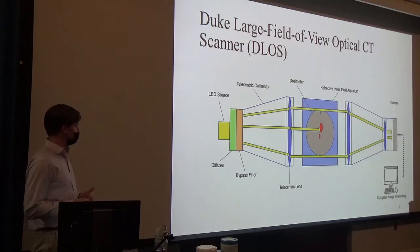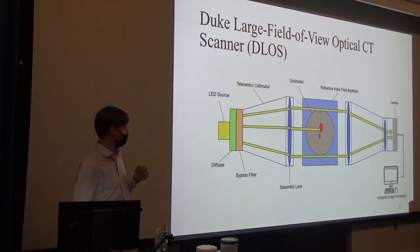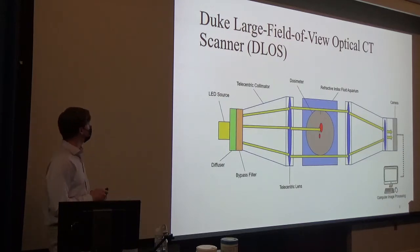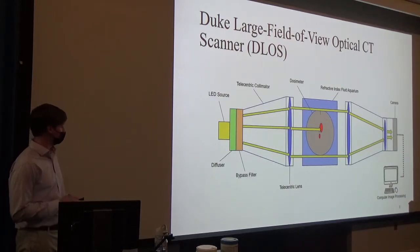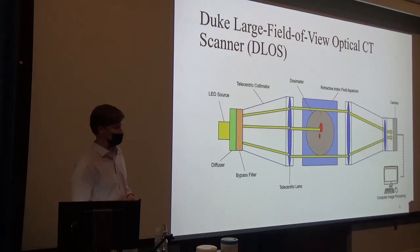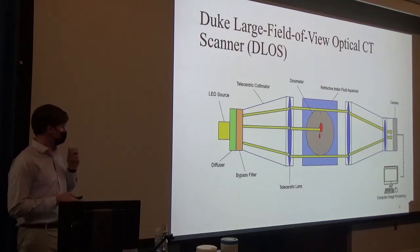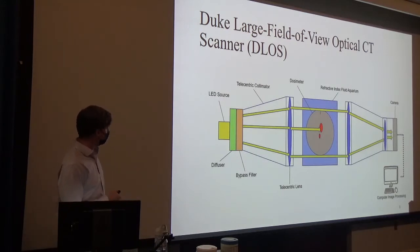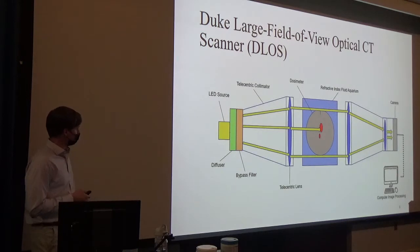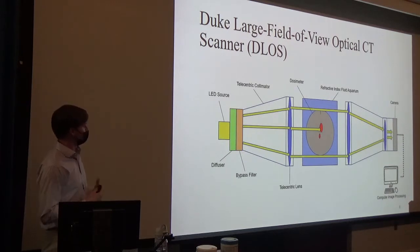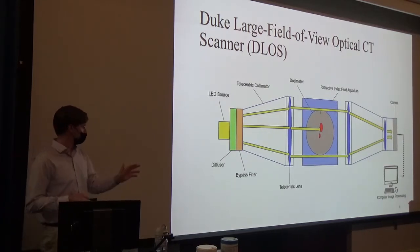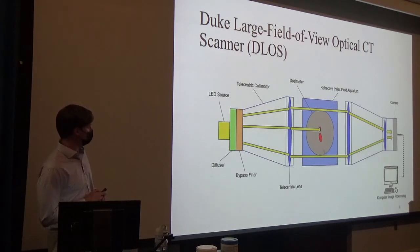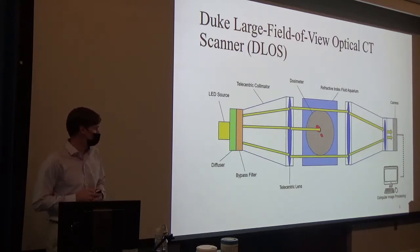After we have irradiated the dosimeter, we need a way to scan it so we can compare it to the predicted dose from the treatment plan. We do that using the Duke Large Field of View Optical CT Scanner, or DLOS. A typical CT in a hospital uses x-rays to image the body, but since we've already irradiated the dosimeter and don't want to invalidate our results, we use visible light. We send visible light through a series of optical lenses through the dosimeter — in this case containing two tumor targets — and into a camera. By spinning the dosimeter and using that 360-degree view, we can form a 3D model with complex computer image processing.